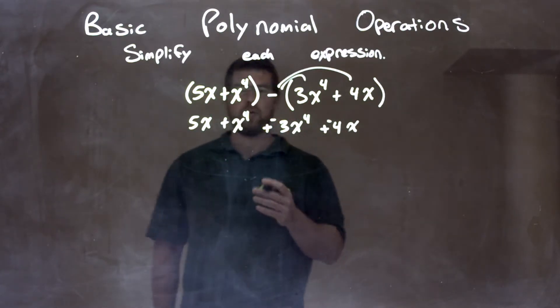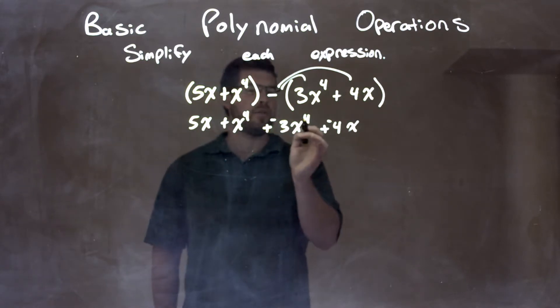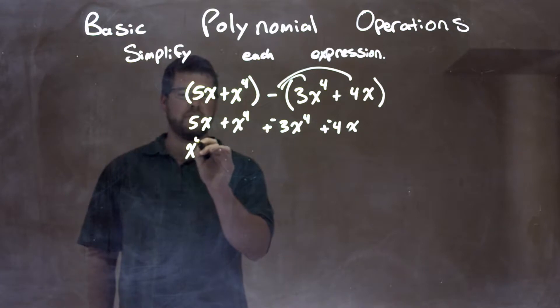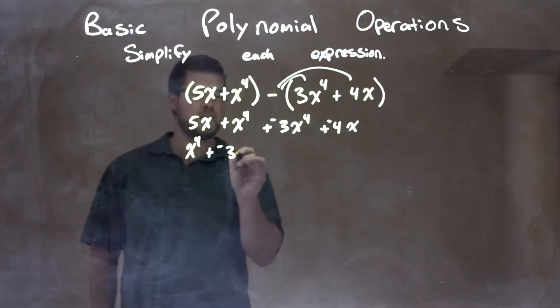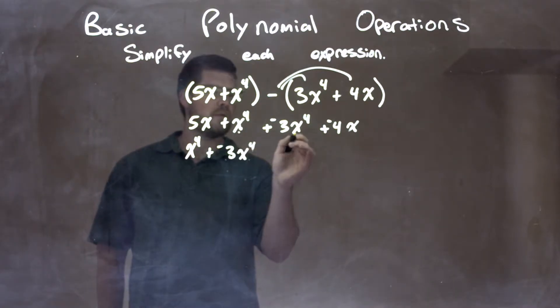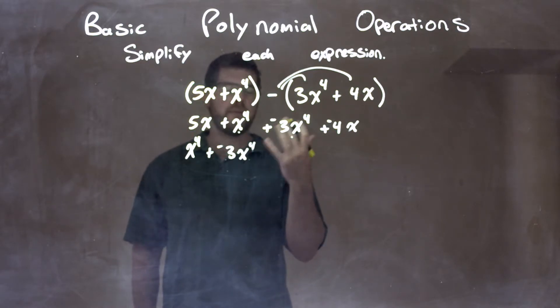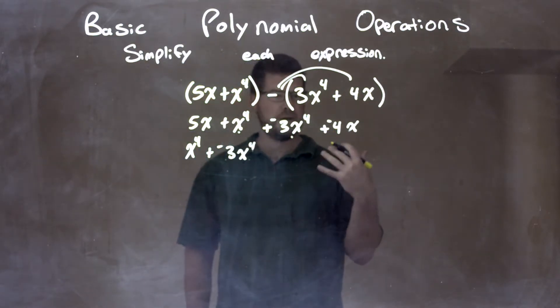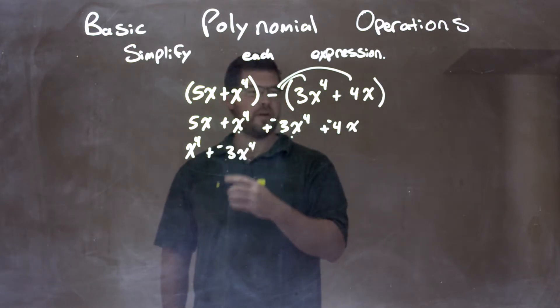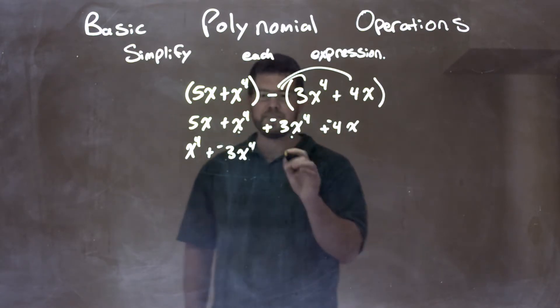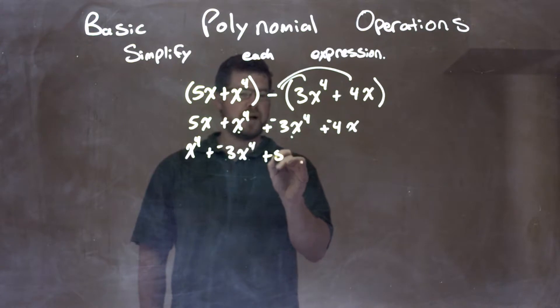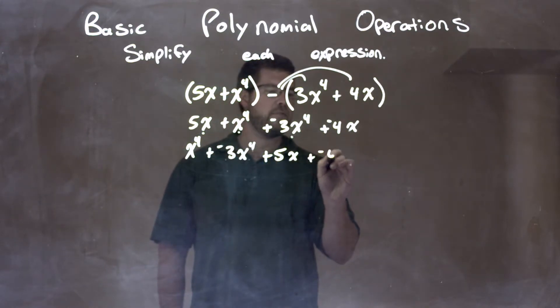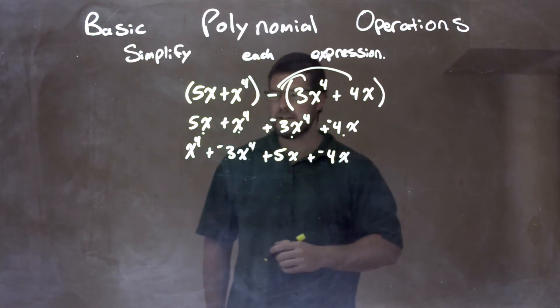So now I'm going to bring my like terms together. My highest degree is x to the fourth. I see a fourth power. So let's go rearrange that. We have x to the fourth here plus a negative 3x to the fourth, and sometimes I put little dots underneath to show that I brought that term over. Now, the next highest degree I see, I don't see a third degree or a second degree, but I see a first degree, 5x and minus 4x. So we have plus 5x, brought that term over, and then we have plus a negative 4x. Brought that term over.